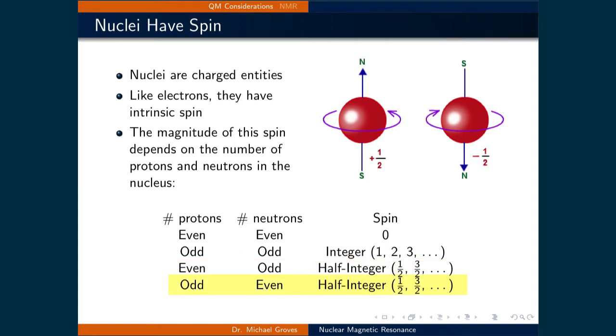And finally, if the number of protons is odd and the number of neutrons is even, then the total amount of intrinsic spin the nucleus has will also be a positive half integer.